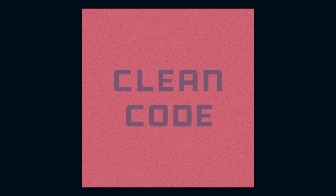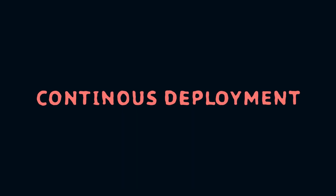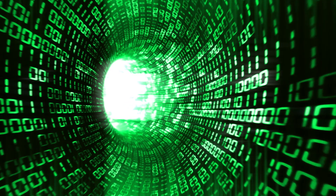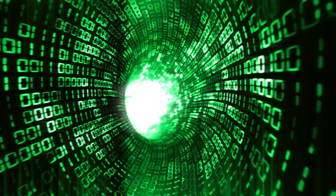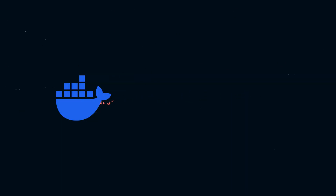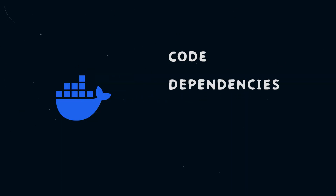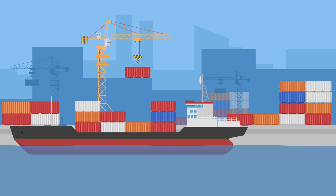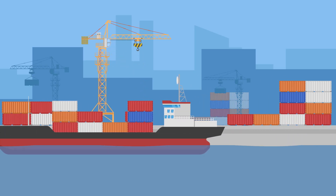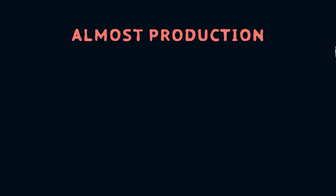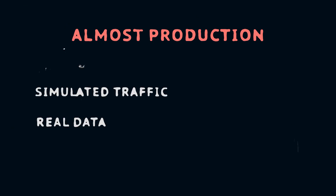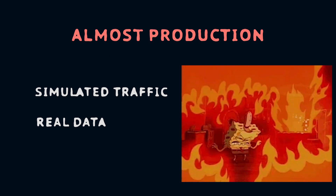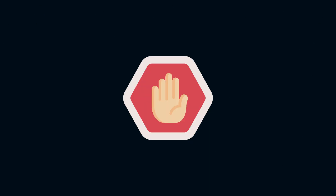And now we're heading into the world of continuous deployment, where things get really interesting. This is where your code leaves the comfort of your development environment and enters the real world. It's packed up into a Docker container — a nice little suitcase of everything it needs to run — and zipped off to a staging environment for a final check. In staging, hello world gets a test of what production will be like: simulated traffic, real data and all the chaos that comes with it. If it can survive here, it's ready for the big leagues.